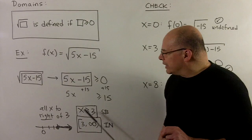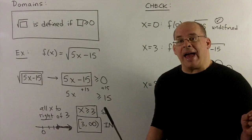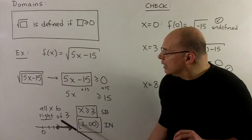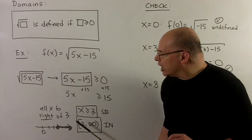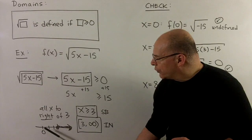If I draw the picture, remember we interpret this as all x to the right of 3. Because we have the equals, we'll color the dot in in the picture. And then for interval notation, I can go from here,